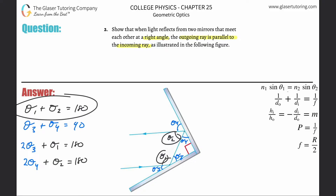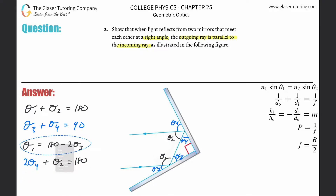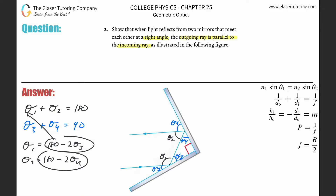How do we now show that theta one plus theta two equals 180 degrees? That's the whole goal. We need to do some substitutions. Let's solve the first equation for theta one: theta one equals 180 minus two times theta three. Then solve the second for theta two: theta two equals 180 minus two times theta four.